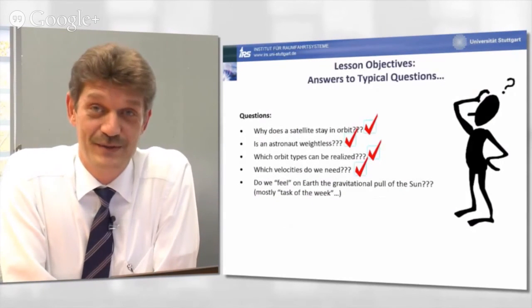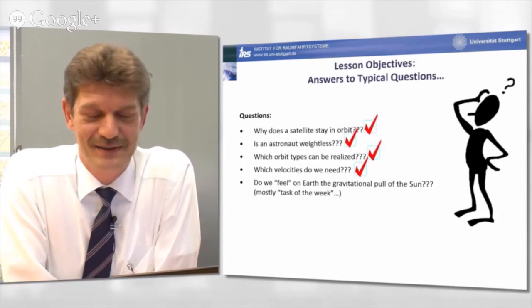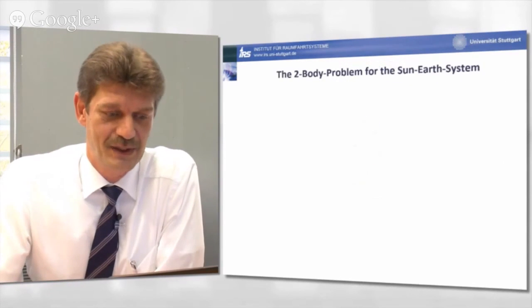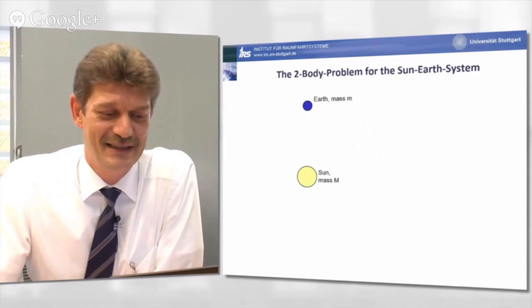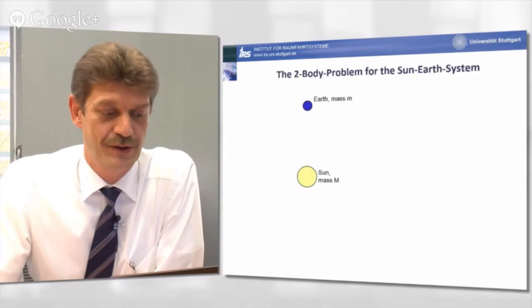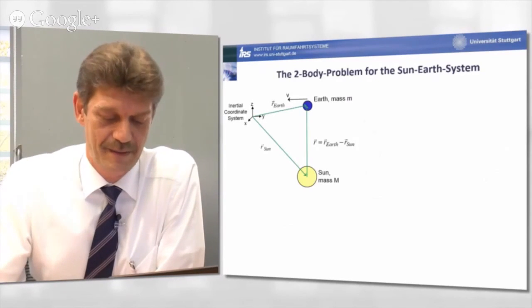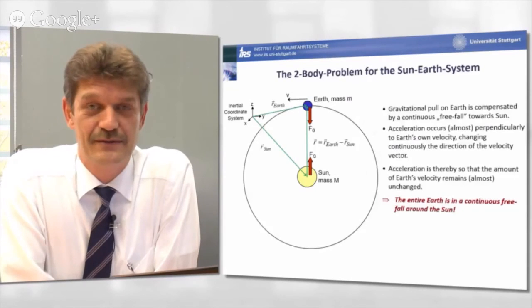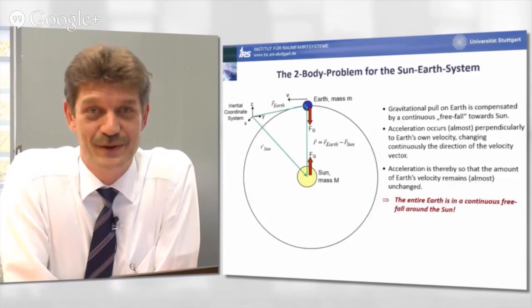Finally, last question, and also partly in task of the week. Do we feel on Earth the gravitational pull of the Sun? Well, the answer is quite easy, quite comparable also to a satellite orbiting the Earth. Again, if we consider now the two bodies, Sun and Earth, with a certain distance to each other, the Earth having a relative velocity to the Sun, we can easily state, based on Newton's first law again, that the gravitational pull on Earth from the Sun is compensated by a continuous free fall towards the Sun. It means nothing else that the entire Earth, you and I, are in a continuous free fall around the Sun.